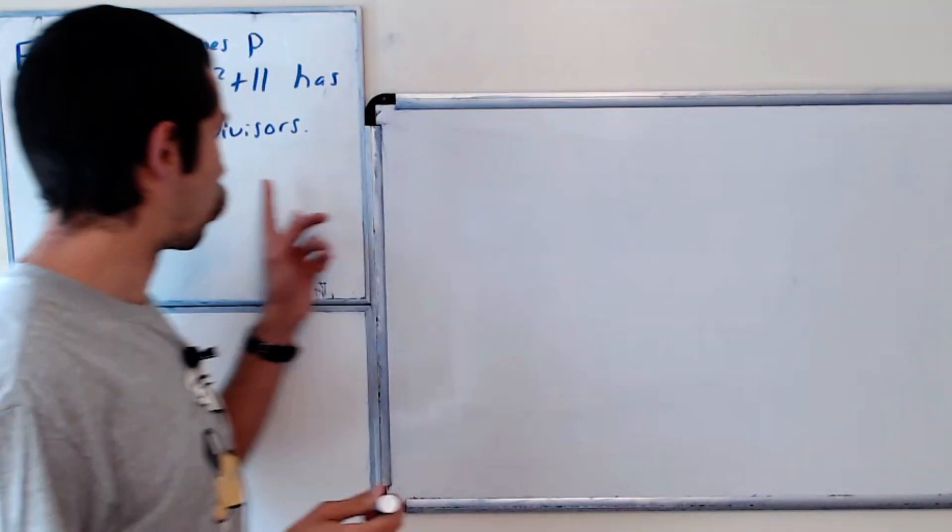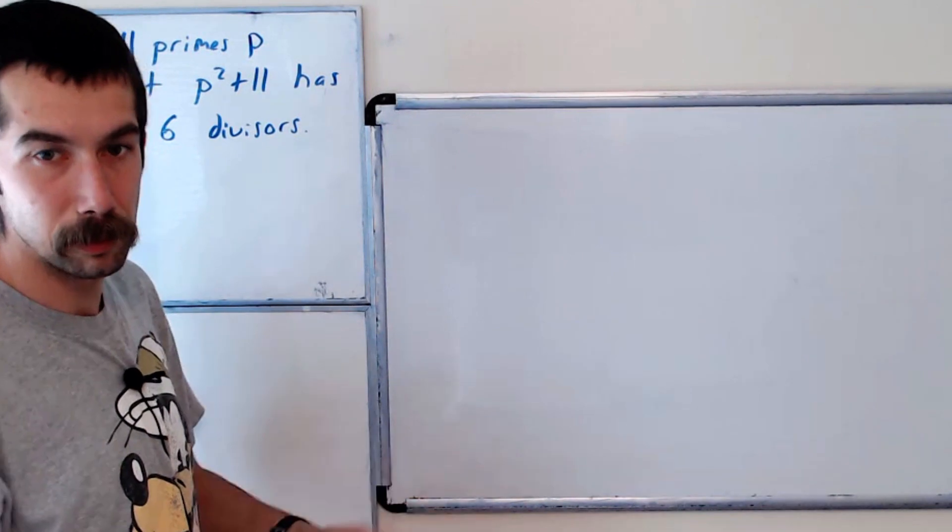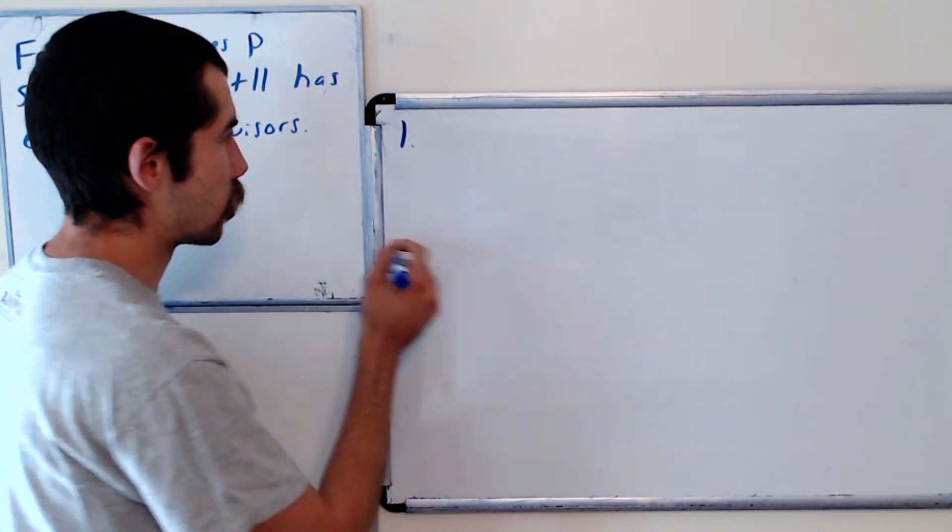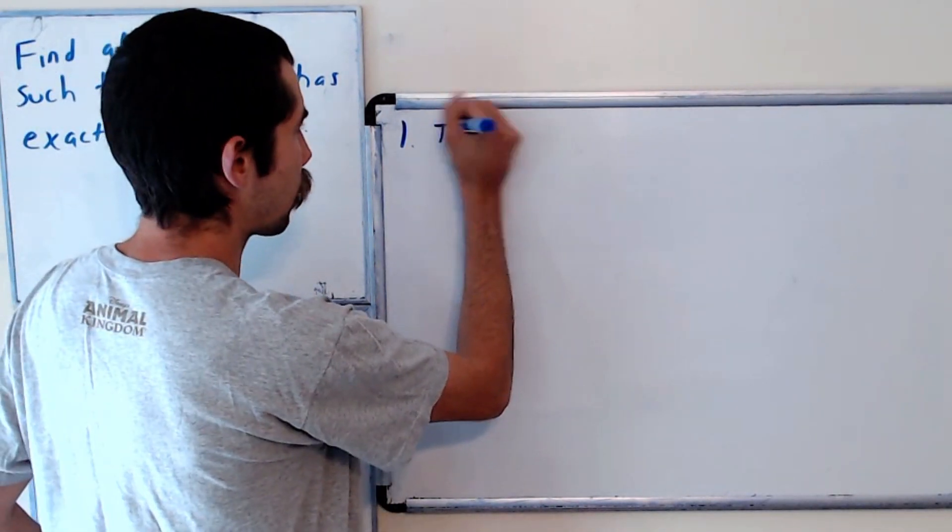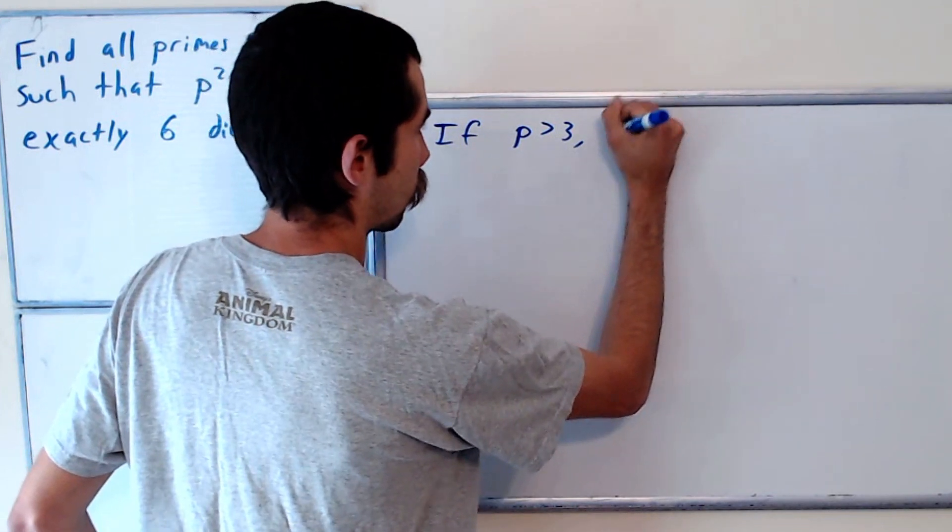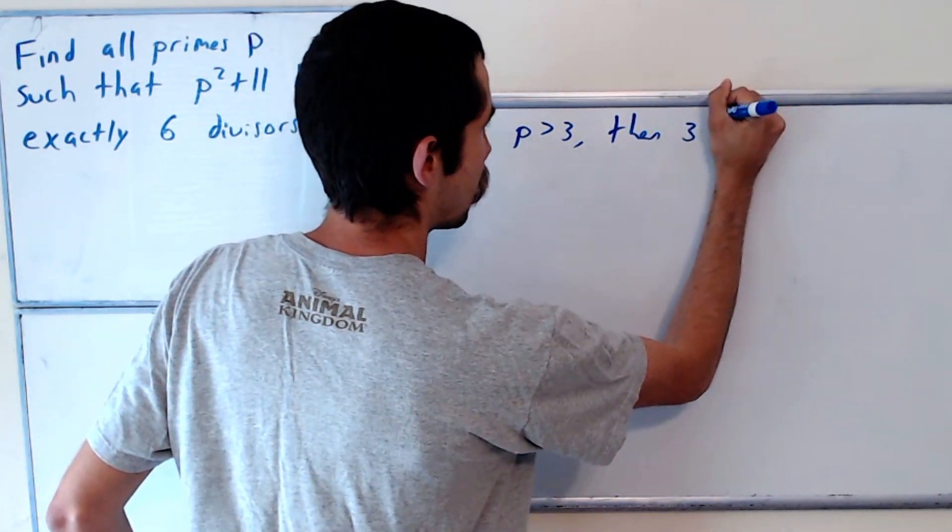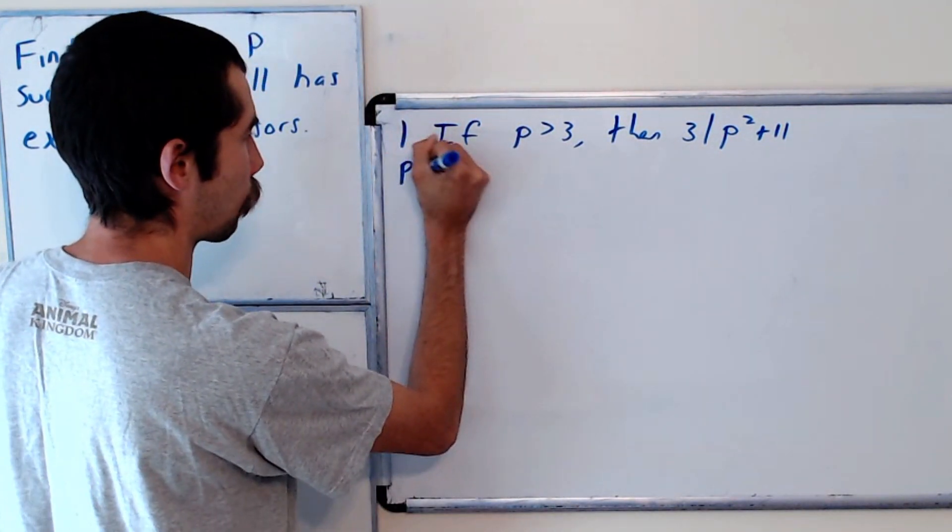Okay, so there's a lot of primes, right? There's infinitely many primes. So we need to eliminate some before we can just test whatever remains. So the first thing we should note is that if the prime is greater than 3, then 3 divides p squared plus 11. Okay, and let's give a quick proof of that.